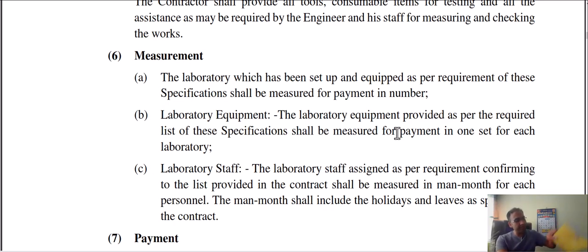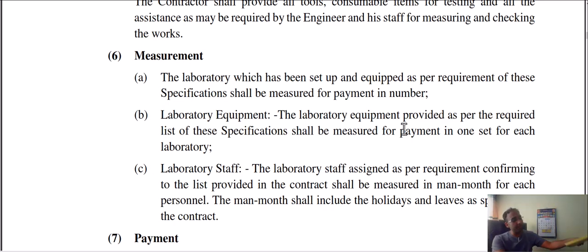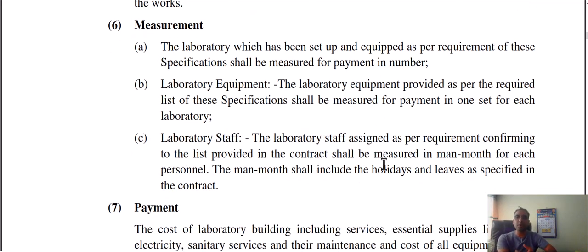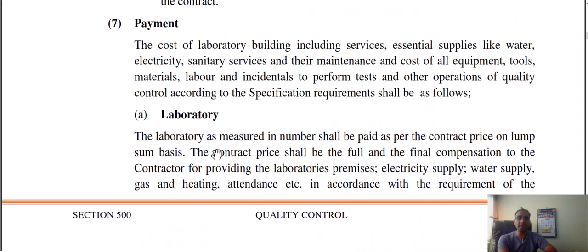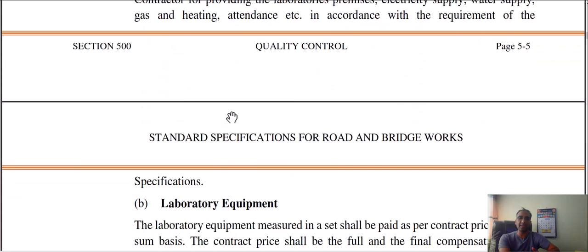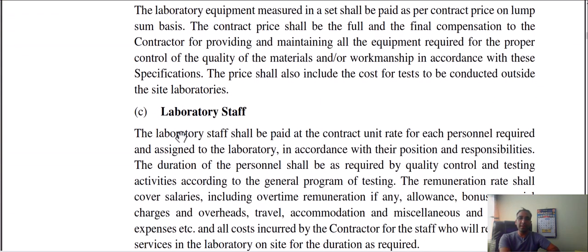What is the standard specification for the norm? The norm is the standard specification for road and bridge. The standard specification norm covers the price — the yellow book is the same reference. The laboratory is the same, and every month we review it. These items are coded from the contract. Regarding payment, the laboratory facilities building and equipment are done by one set, and the laboratory is run on a personal man-month basis.